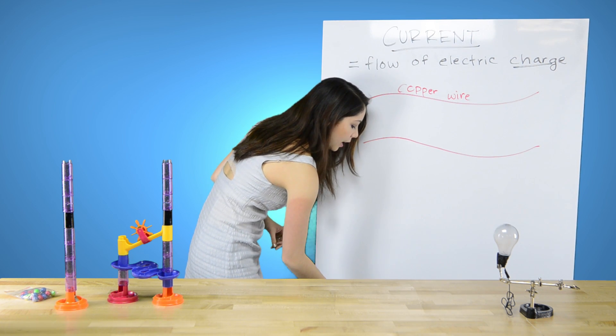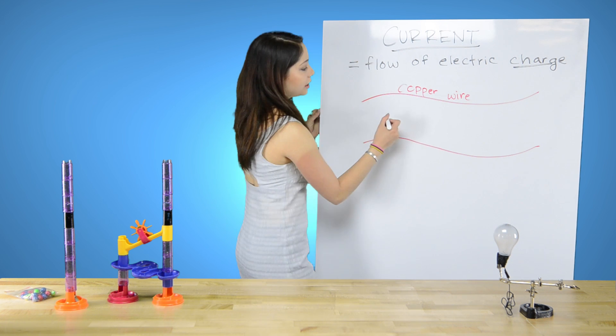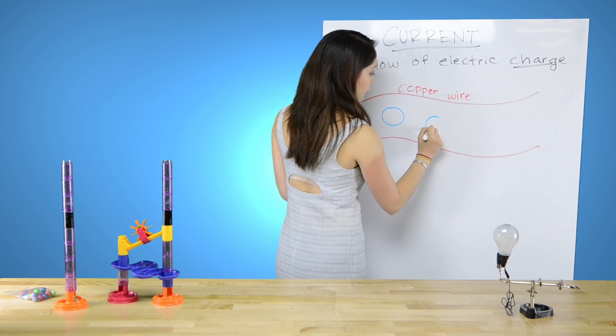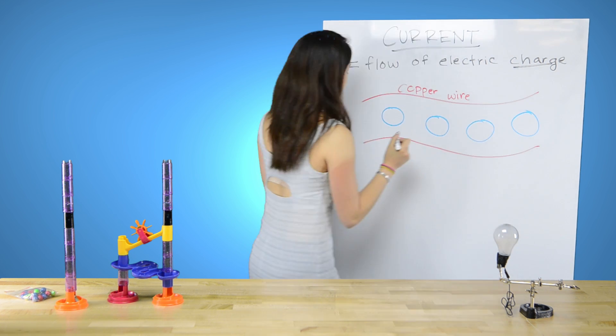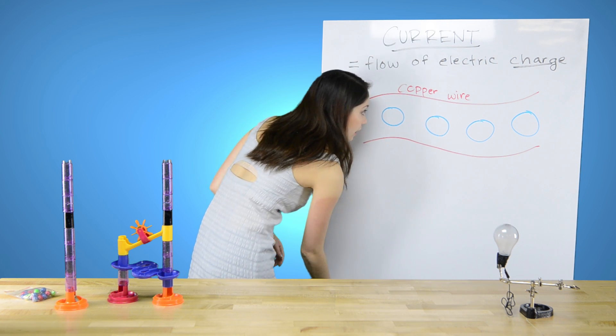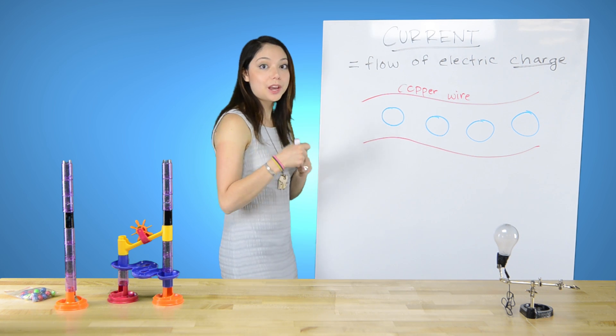In each one, we have a positively charged nucleus. And on each of these nuclei, we have an electron.